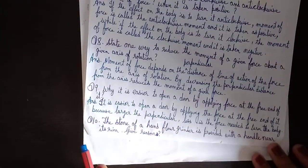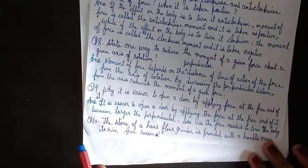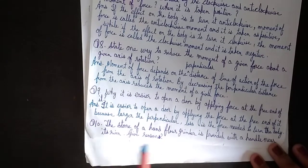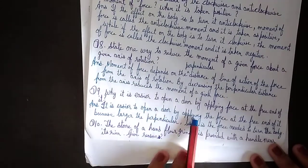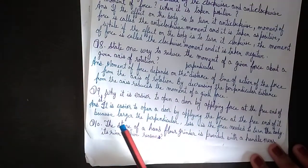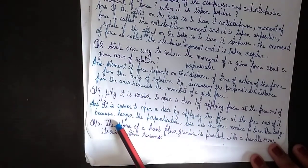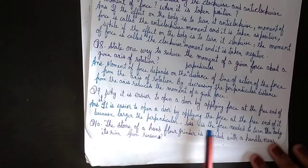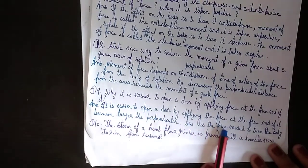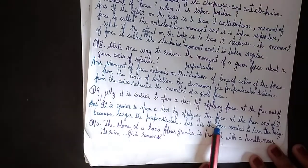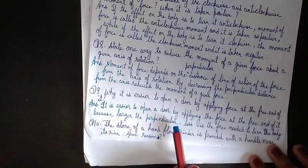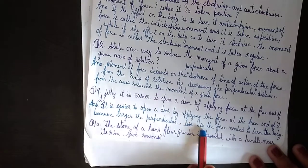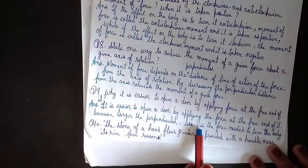Why is it easier to open a door by applying the force at the free end of it? It is easier to open a door by applying the force at the free end because the larger the perpendicular distance, the less is the force needed to turn the body.